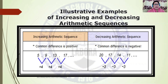Let us have illustrative examples of increasing and decreasing arithmetic sequences. For example, given 5, 9, 13, 17, and so on. Taking the Common Difference: 9 minus 5 is positive 4, 13 minus 9 is positive 4, 17 minus 13 is positive 4. So the Common Difference is positive 4, and that is why we call this an Increasing Arithmetic Sequence.